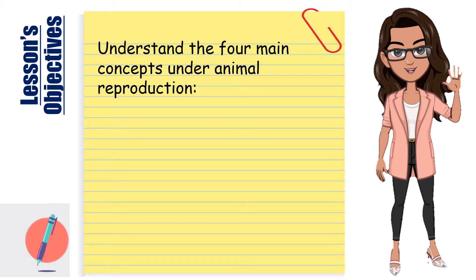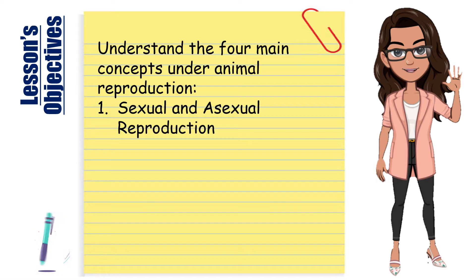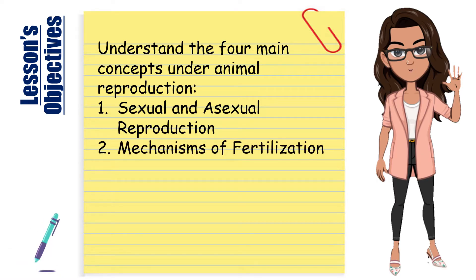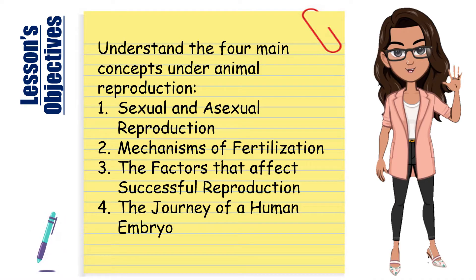At the end of this lesson, you should be able to demonstrate understanding of the four main concepts under animal reproduction: number one, sexual and asexual reproduction; two, mechanisms of fertilization; three, the factors that affect successful reproduction; and lastly, the journey of a human embryo.